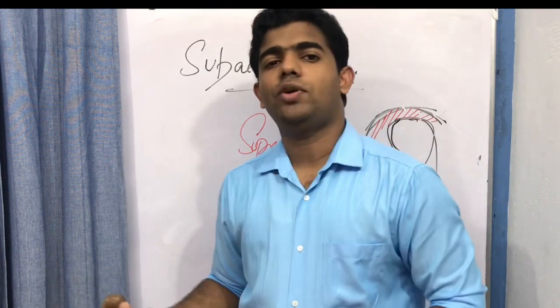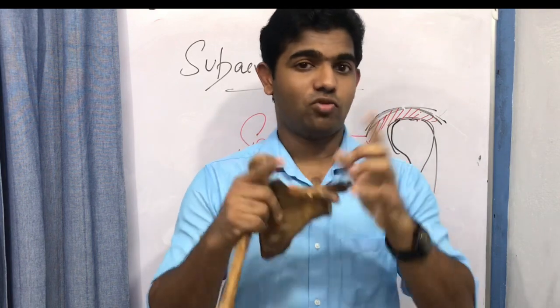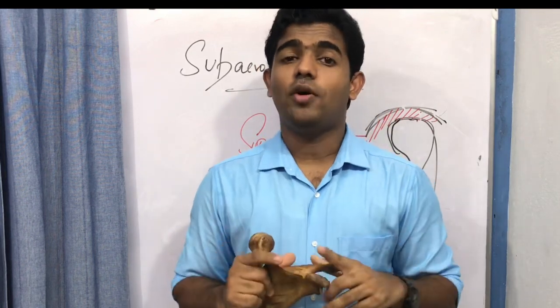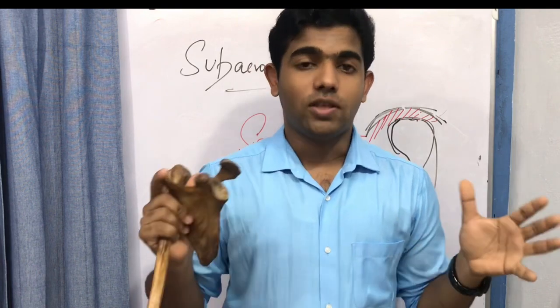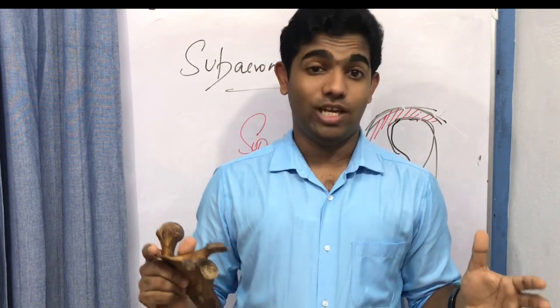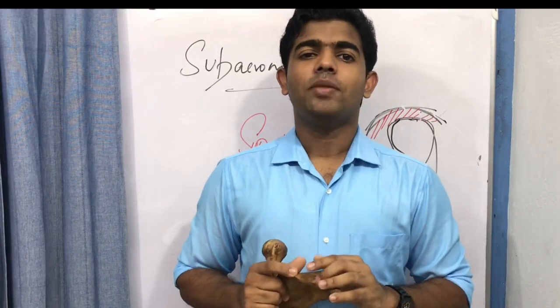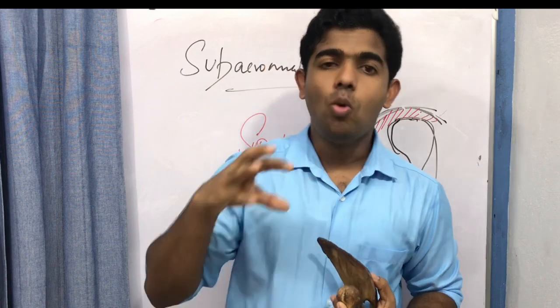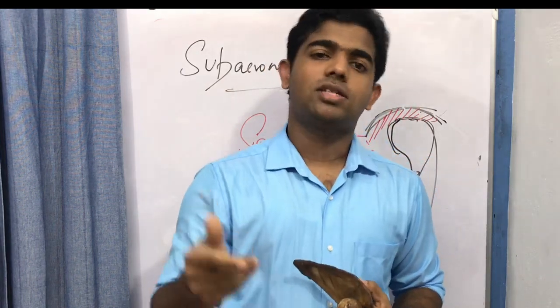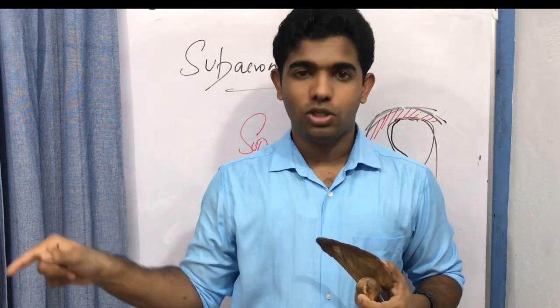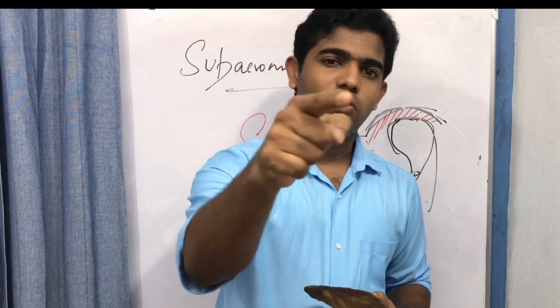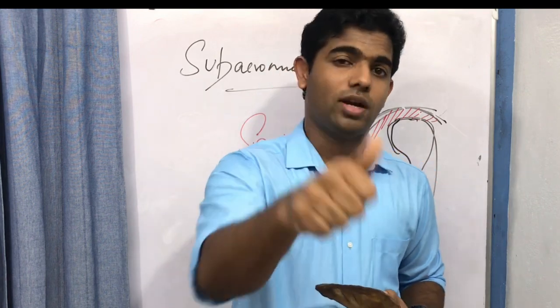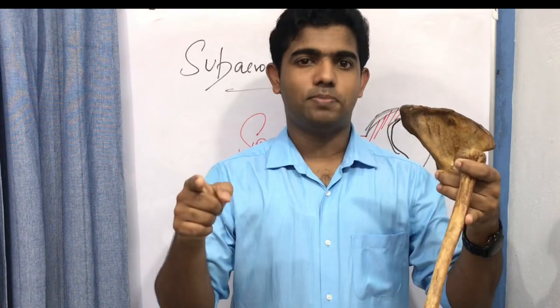To summarize: the coracoacromial arch protects delicate structures and prevents superior humeral translation; the subacromial and subdeltoid bursas reduce friction between tendons; and the subacromial or suprahumeral space allows structures to pass through. When the space decreases, it can lead to pain, reduced range of motion, and muscular wasting. In the next video on shoulder complex, we will discuss glenohumeral joint motion including flexion, extension, rotation, and arthrokinematics. Stay tuned and please like and subscribe.